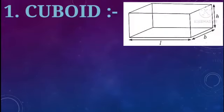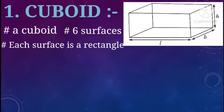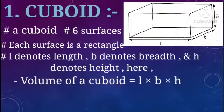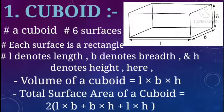First, cuboid. Look at the diagram — it is a cuboid, made up of 6 surfaces, and each surface is a rectangle. L denotes length, B denotes breadth, and H denotes height. Volume of a cuboid is equal to L×B×H. Therefore, total surface area of a cuboid is equal to 2 into (L×B + B×H + H×L).